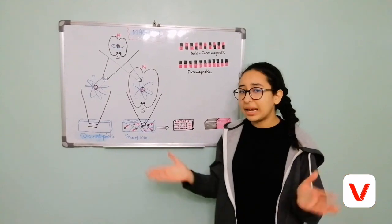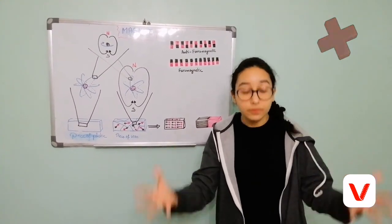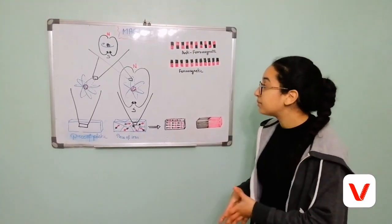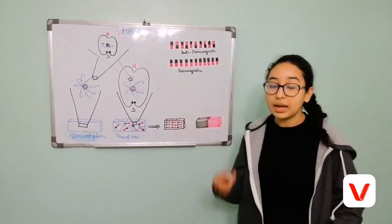But having a magnetic atom doesn't mean that the material made from a lot of these atoms is magnetic too. Because when a bunch of atoms get together to make a solid, they have two choices.